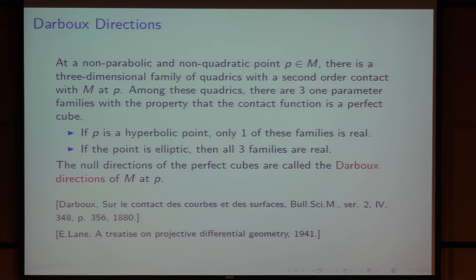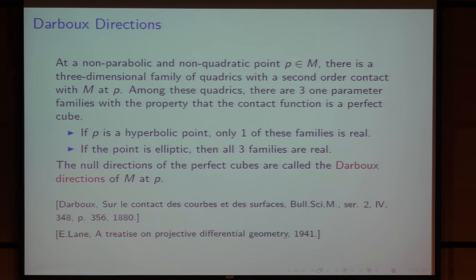Now I'll talk about the very important directions called Darboux directions on a surface. If you consider any point which is not parabolic, then it is either elliptic or hyperbolic. If it is non-quadratic, there is a three-dimensional family of quadrics with second-order contact with the surface at P. Among these quadrics, we can choose three one-parameter families that have the property that the contact function is a perfect cube. If P is hyperbolic, only one of these families is real. If P is elliptic, then all three families are real. The null directions of the perfect cubes are called the Darboux directions of M at P.